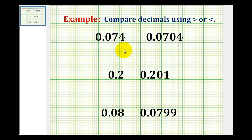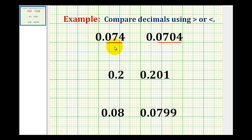We want to compare the following decimals using the greater than or less than inequality symbols. Sometimes it's challenging to compare decimals when they have a different number of digits to the right of the decimal. Notice how this has three digits to the right of the decimal and this one has four. So if we rewrite them with the same number of digits to the right of the decimal, they're much easier to compare.